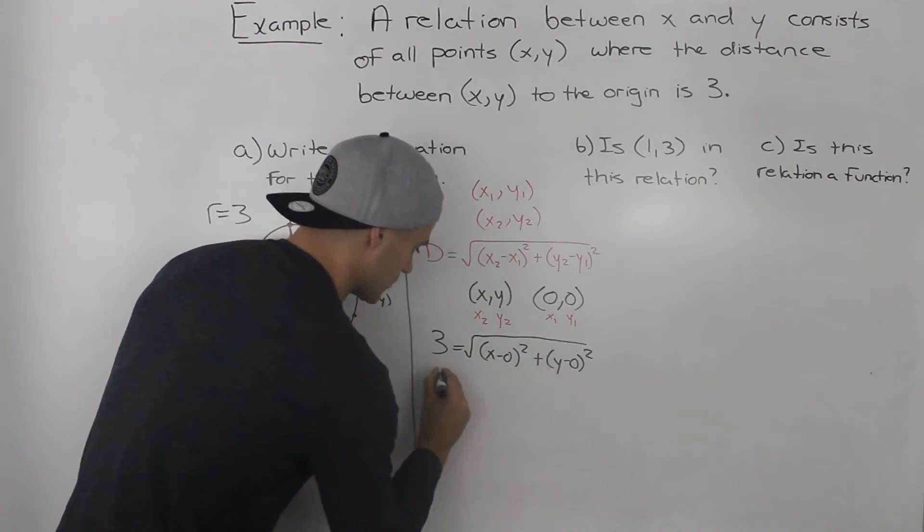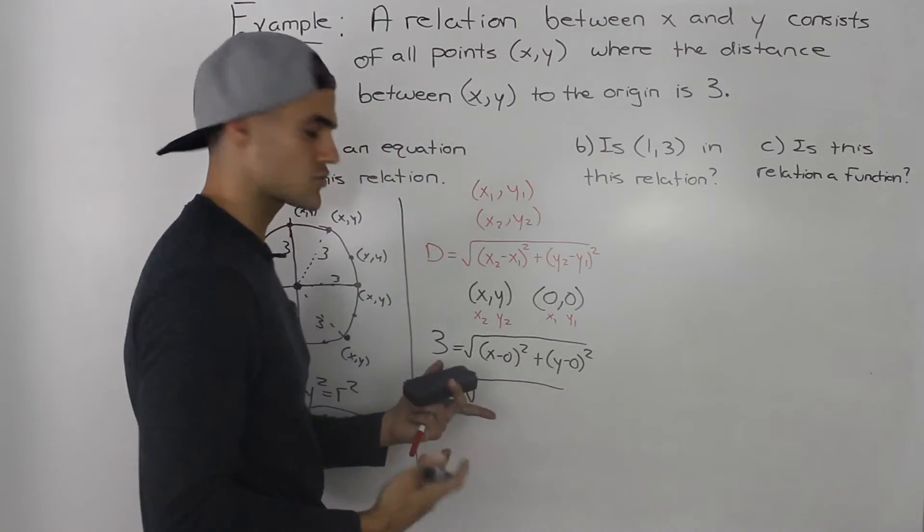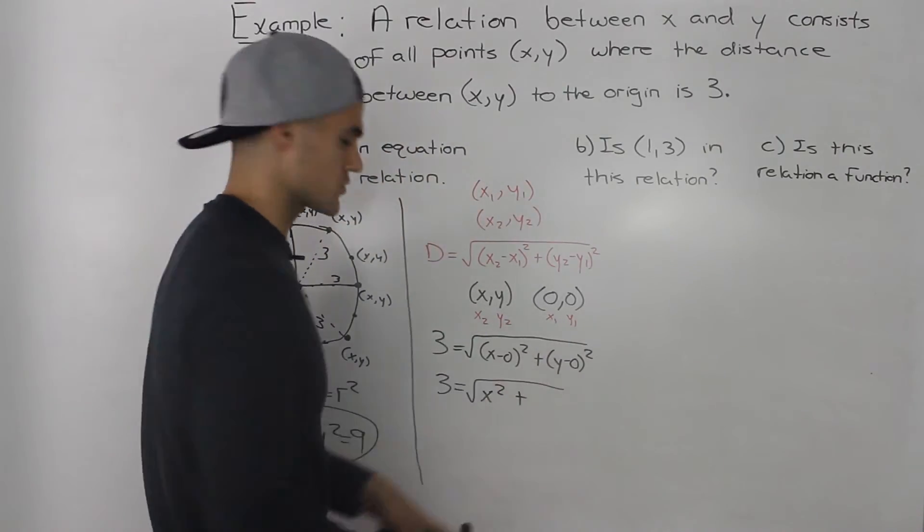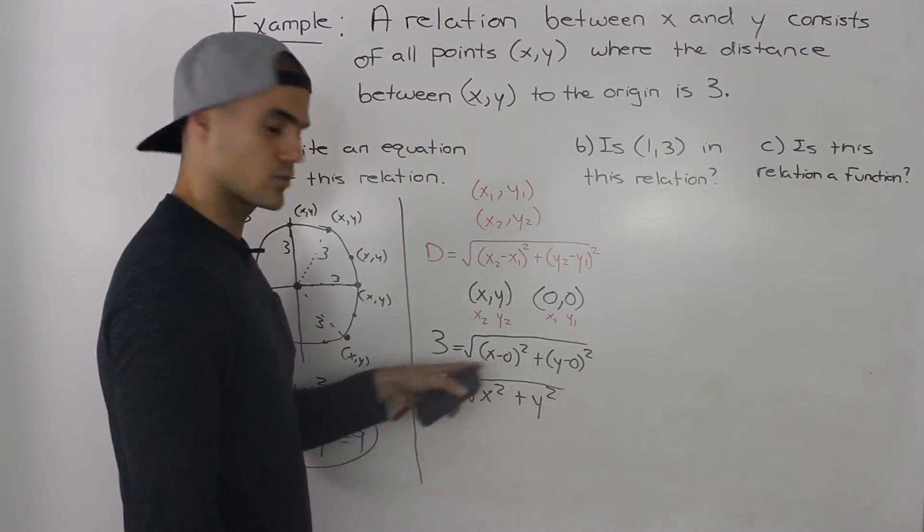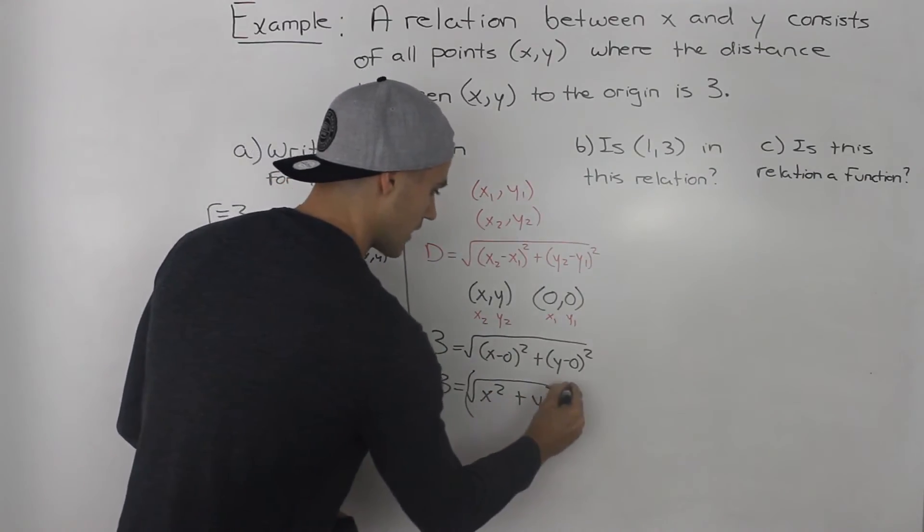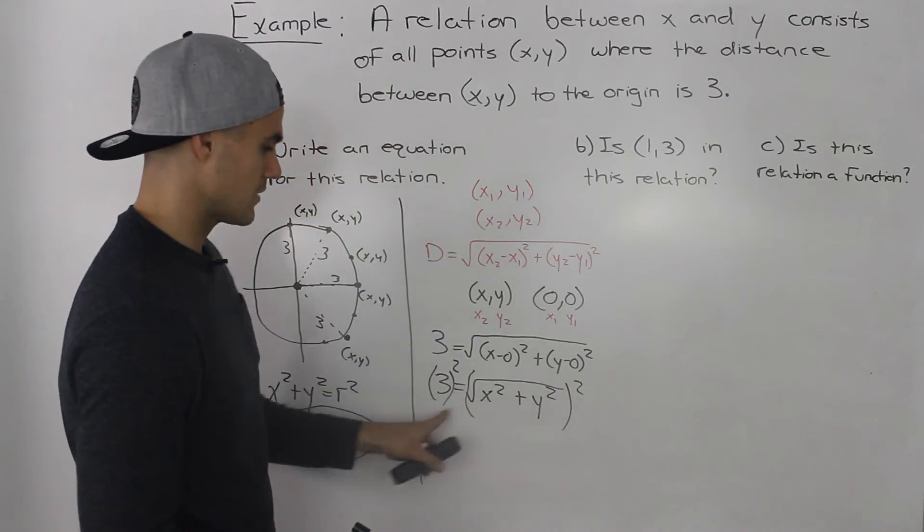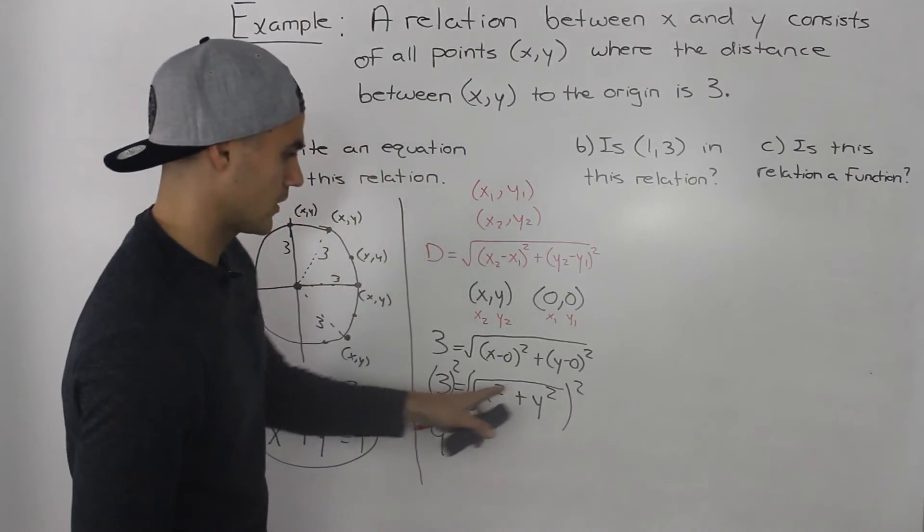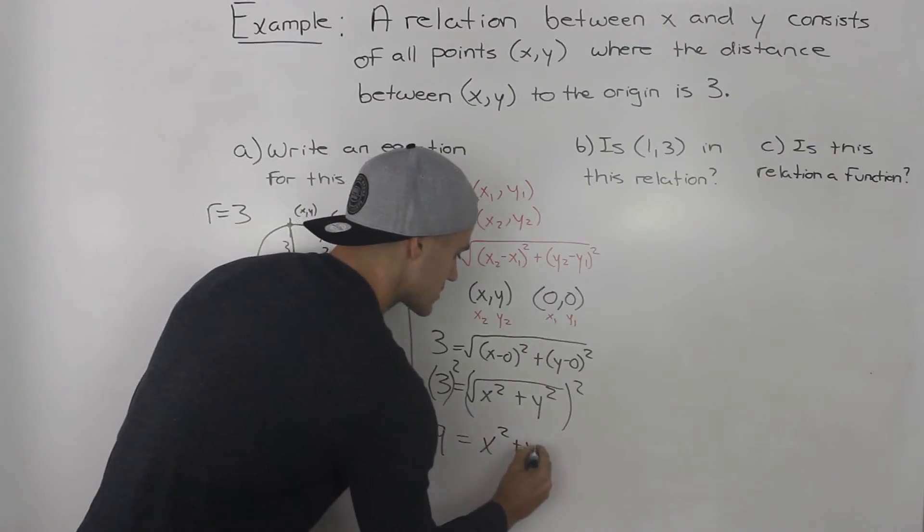So let's simplify this a little more. So we'd have 3 = √(x² + y²), since x - 0 squared is just x² and y - 0 squared is just y². And now if we want to get rid of this square root here on the right side, what do we do to both sides? Well, we can square both sides. Right? What we do to one side, we've got to do to the other. So 3² is 9, and when we square this side, the square root goes away, so we're left with x² + y².